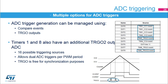However, using TRGO for ADC triggering prevents it from being used for synchronization purposes. For this reason, timers 1 and 8 also have an additional TRGO2 output fully devoted to ADC triggering. TRGO2 offers 16 possibilities, including the six compare events and the possibility to have a dual trigger per PWM period by combining the compare 4 and 6 events. This also leaves the TRGO free for multiple timer synchronization schemes.